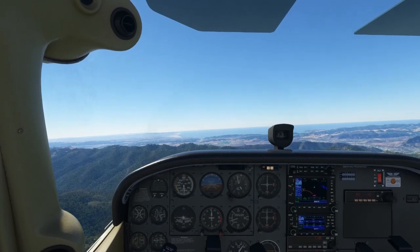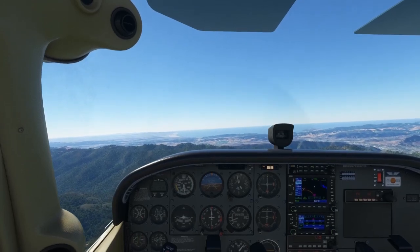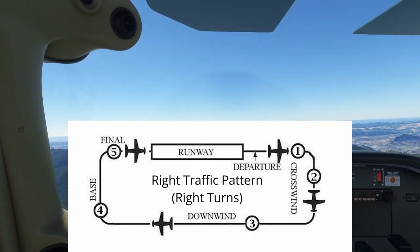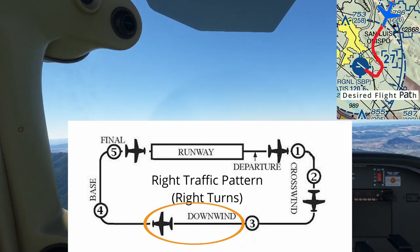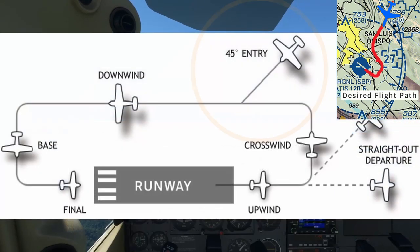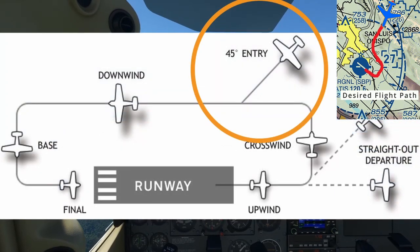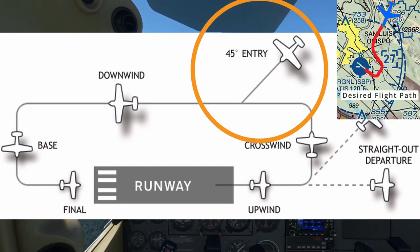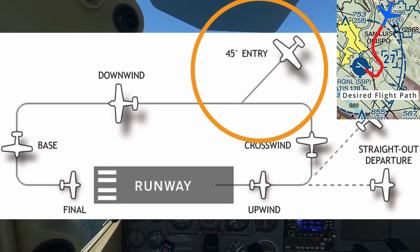The tower instructed us to make a right downwind for runway 29er. Looking back at the traffic pattern diagram, we'll be entering the downwind leg, which is the leg of the pattern which runs parallel to the runway in the opposite direction. The proper way to enter the downwind is on a 45-degree angle. It doesn't need to be a perfect 45 degrees, but try to get as close as you can, as this will allow you to fit nicely in the traffic pattern while also giving you an opportunity to see other traffic that may already be in the pattern as you approach the downwind leg.